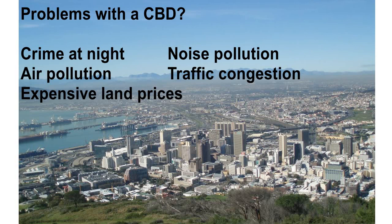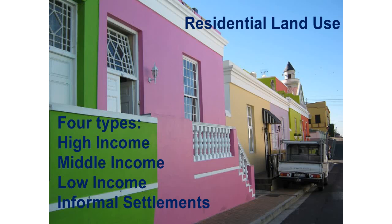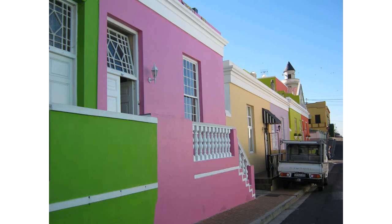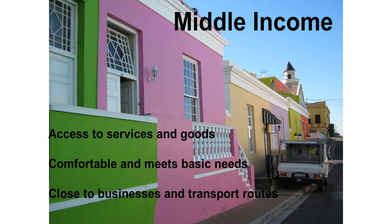Moving on to residential areas, we have four different types: high income, middle income, low income, and informal settlements. The photograph here is of Worcup in Cape Town and it is an example of middle income housing. This area has access to goods and services, it's comfortable, meets basic needs, and it's close to businesses and transport routes — not super expensive but not lacking anything either.